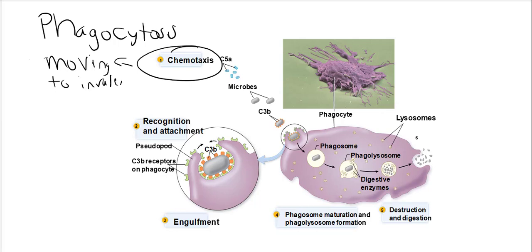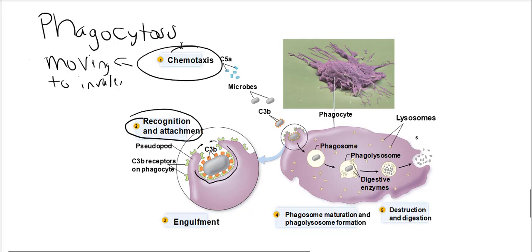Once the phagocyte has reached the invader, the second step is that the phagocyte will have to attach to the pathogenic invader. As shown here, this macrophage in purple has special receptors on its surface that will bind to the pathogen.